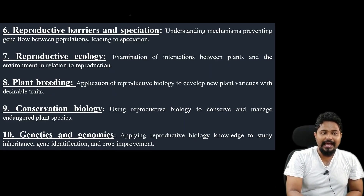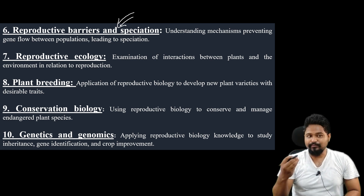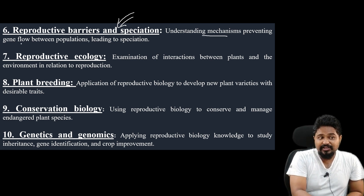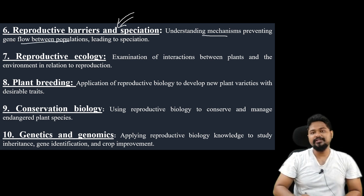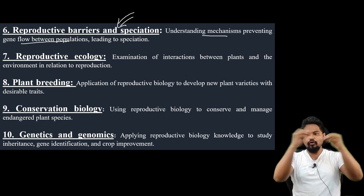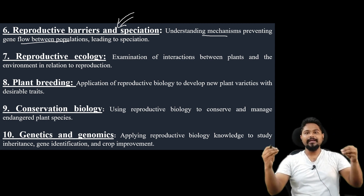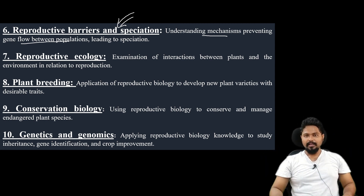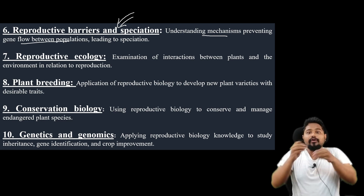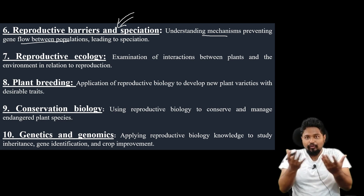This is the help of reproductive barriers and speciation concept — understanding the mechanisms preventing gene flow between populations. What is gene flow? Gene flow means reproduction and cross-pollination between populations.